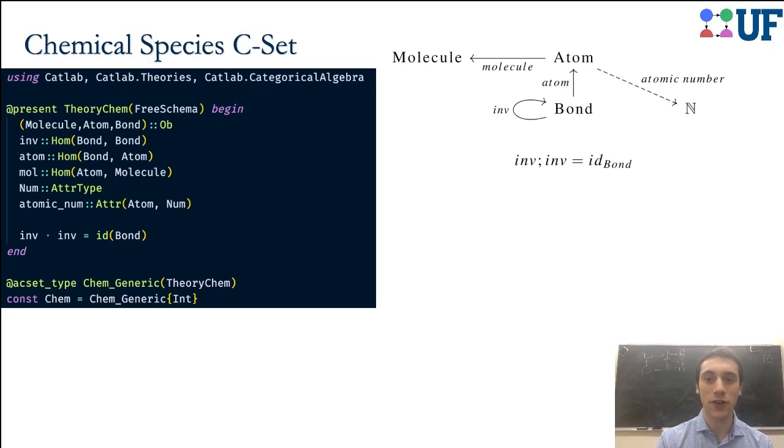Now let's return to our chemistry problem. The trickiest issue here is representing chemical bonds as undirected, and one way to do that is to make the bond table actually have two rows for every single chemical bond. In one row we'll point to a source, in one row we'll point to a target, but there's no order between those two. The way that we pair up the bonds which are actually corresponding to the same bond is to give this involution function which we enforce with this equation.